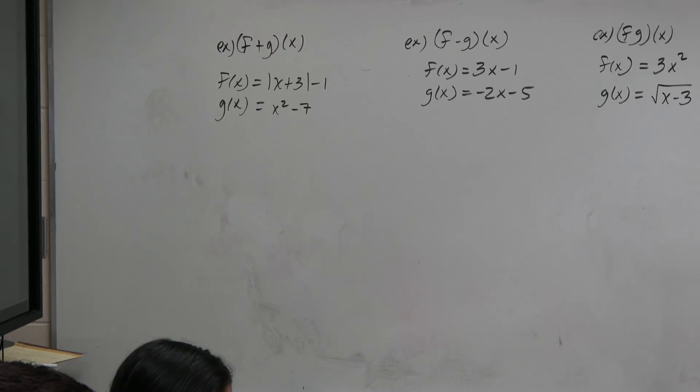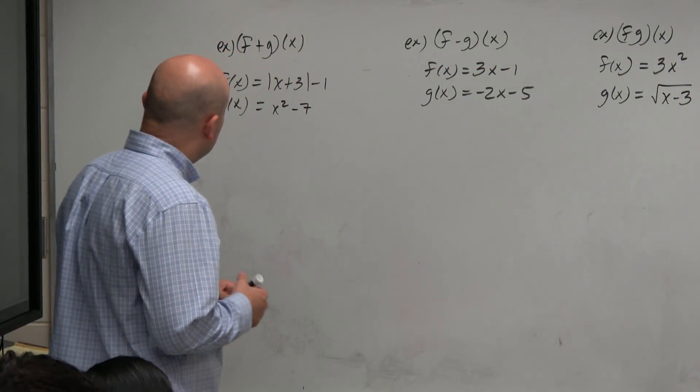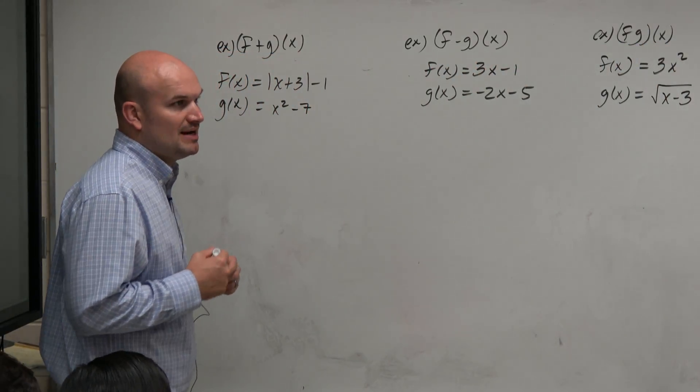So in the first example here, I have f of x plus g of x. And you can notice here, I have f of x equals absolute value of x plus 3 minus 1, and g of x equals x squared minus 7.